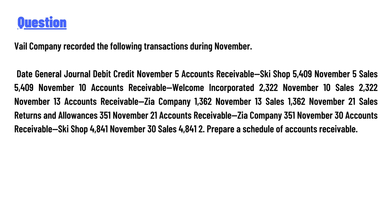Number 13: Sales — credit 1,362. Number 21: Sales Returns and Allowances — debit 351. Number 21: Account Receivable, The Company — credit 351. Number 30: Account Receivable, Sky Shop — debit 4,841. Number 30: Sales — credit 4,841. Prepare a schedule of accounts receivable.